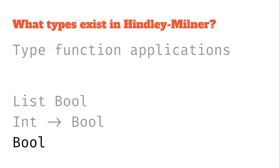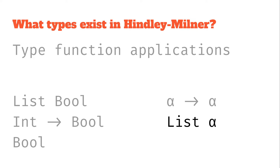Bool, int, and all those other types are actually type function applications themselves — type functions that take zero arguments. List takes one argument: just the thing that is in the list. The function type function takes two arguments, for example int and bool. We can also have a type function applied to type variables, such as a list of alphas, where list is our type function taking one type argument — the type variable alpha.